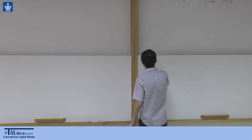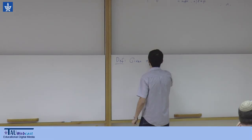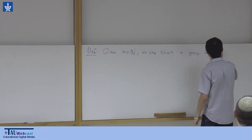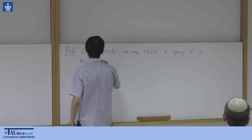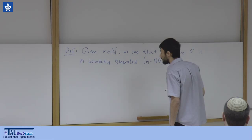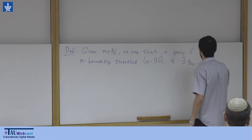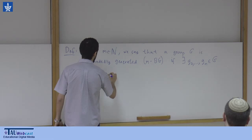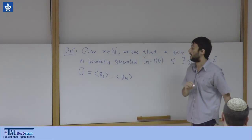I'll start with a little definition. Given some positive integer n, we say that a group G is m-bounded regenerated.